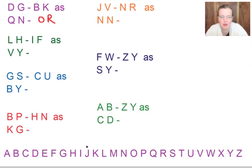L to I is back 1, 2, 3. So you go V back 3, 1, 2, 3 is S.